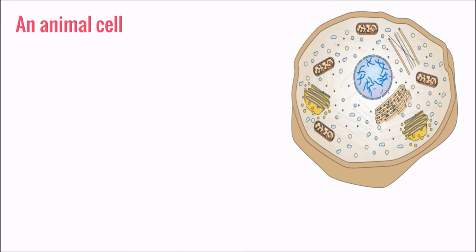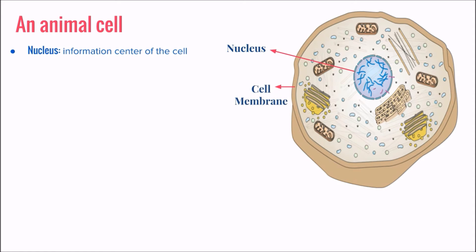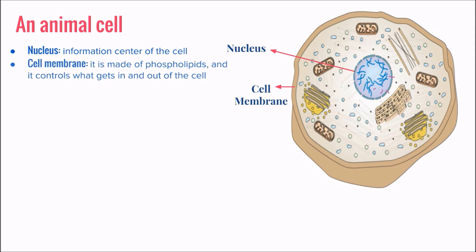So let's start with the animal cell anatomy. First up, the nucleus. The nucleus contains information about the cell, including how to make proteins, cell division, etc. Then we have the cell membrane, which is made up of phospholipids and controls what gets in and out of the cell.